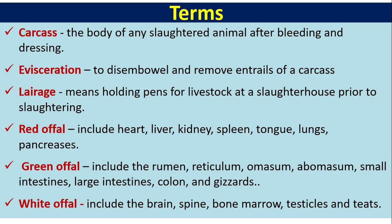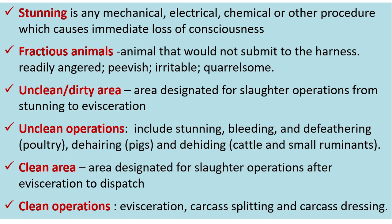White offal includes brain, spine, bone marrow, testicles, and teeth. Stunning is any mechanical, electrical, chemical, or other procedure which causes immediate loss of consciousness. Fractious animals are those that would not submit to handling readily — they are irritable, easily angered, and quarrelsome. The unclean area is designated for slaughter operations from stunning to evisceration, including bleeding and dehiding or dehairing. The clean area is designated for operations after evisceration to dispatch, including carcass splitting and dressing.